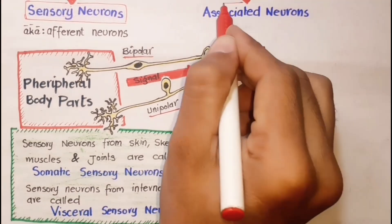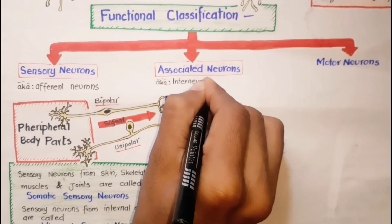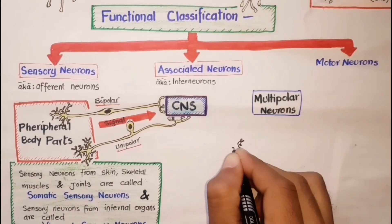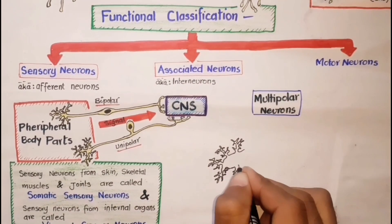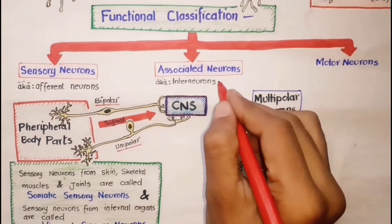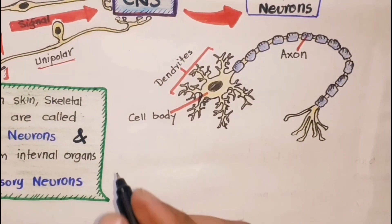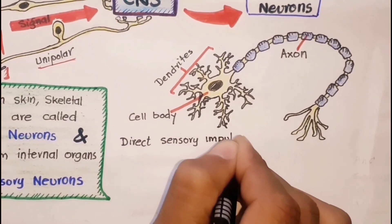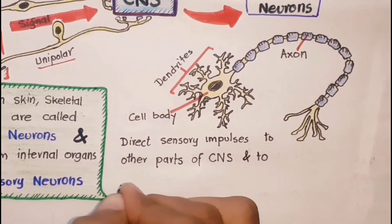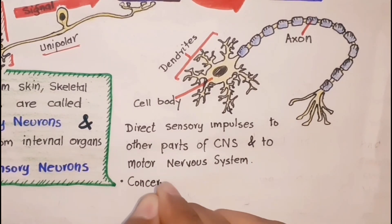Association neurons, also known as interneurons, are multipolar and lie entirely within the brain and spinal cord. They have many dendrites and a single axon arising from the cell body. Interneurons are primarily associated with linking other neurons — they direct incoming sensory impulses to appropriate parts of the CNS for processing and interpreting, then transfer other impulses to motor neurons.